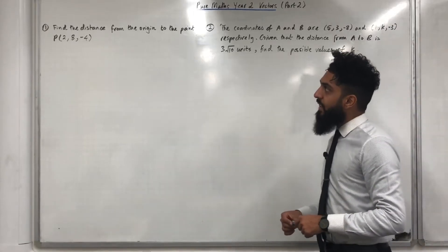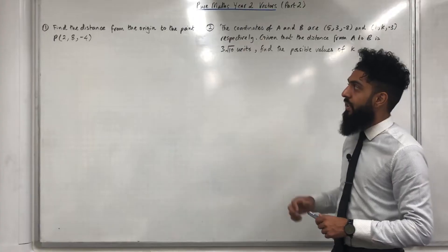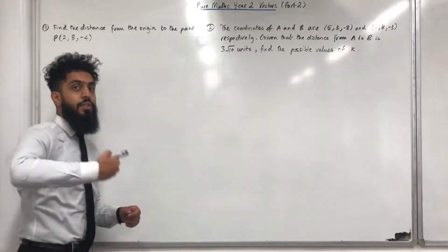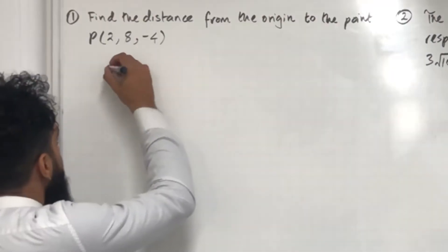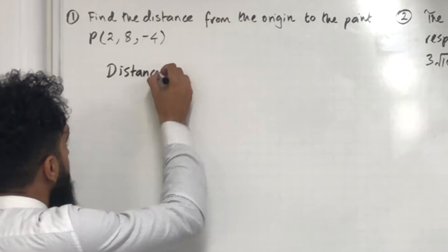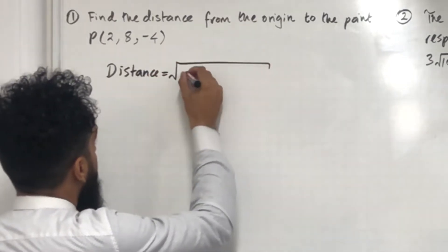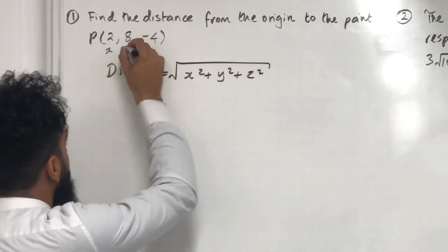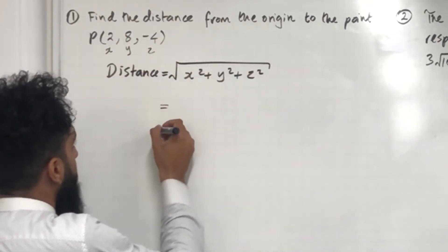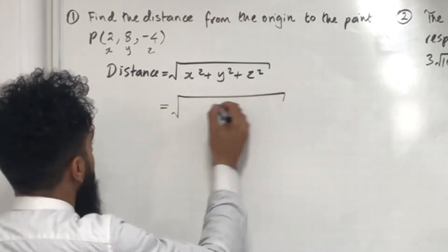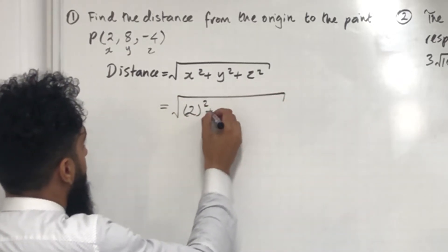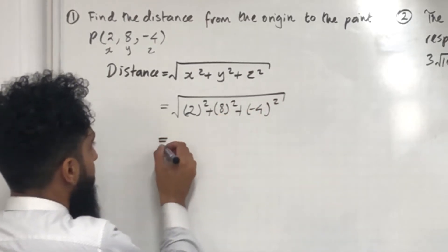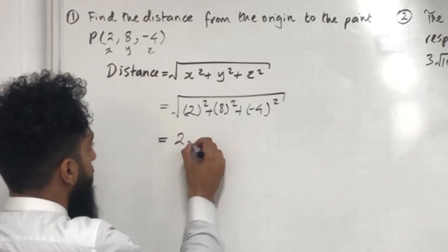Question number 1: Find the distance from the origin to the point P with coordinates 2, 8 and minus 4. The distance from the origin to the point P is given by: distance equals square root of x squared plus y squared plus z squared, where x, y and z are the coordinates. Substituting gives us square root of 2 squared plus 8 squared plus minus 4 squared. Putting this into the calculator gives 2 square root 21.